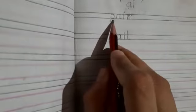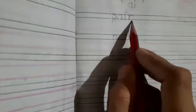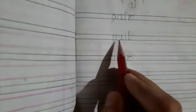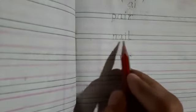Stain, okay. Next is J-A-I-L — jail. J-A-I-L, jail. Next is M-A-I-N — mail. Okay, we will repeat these words.